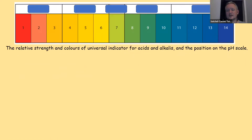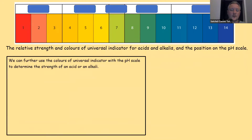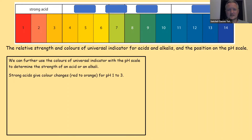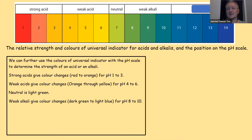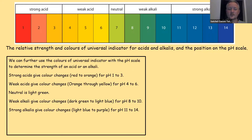The relative strength and colours of universal indicator for acids and alkalis can be shown with this scale. It's worth noting that the further away from neutral something becomes, the stronger the acid or alkaline. Starting at 7 — neutral — going to 6 is weakly acidic, but going to 1 is strongly acidic. Strong acids give colour changes red to orange for pH 1 to 3. Weak acids are closer to neutral, giving colour changes through orange to yellow for pH 4 to 6. Neutral is light green at pH 7. Weak alkalis give colour changes from dark green to light blue for pH 8 to 10, while strong alkalis are furthest away, light blue to purple for pH 11 to 14.